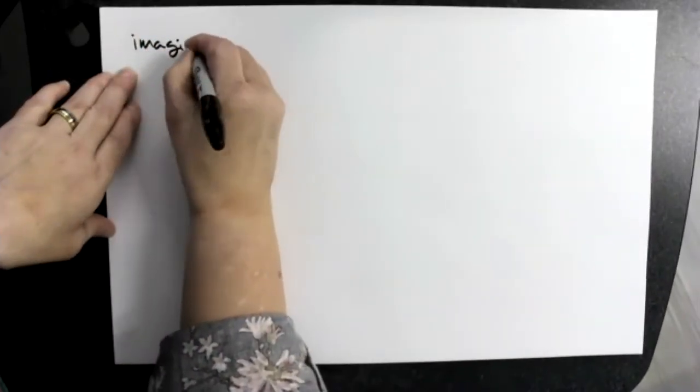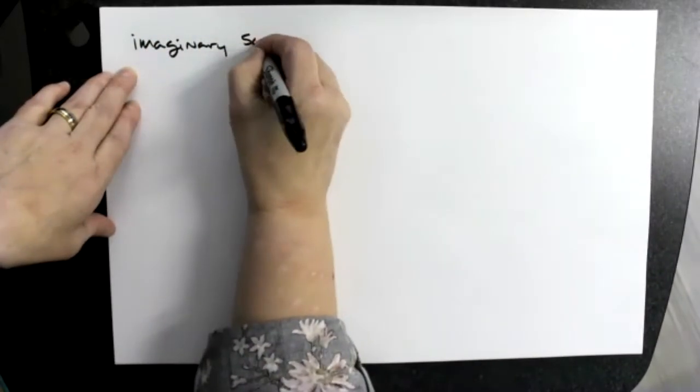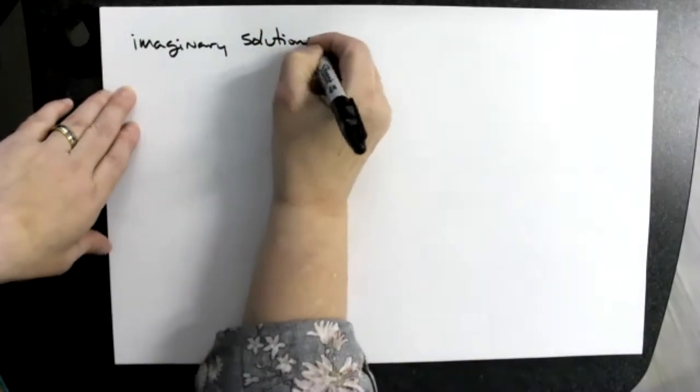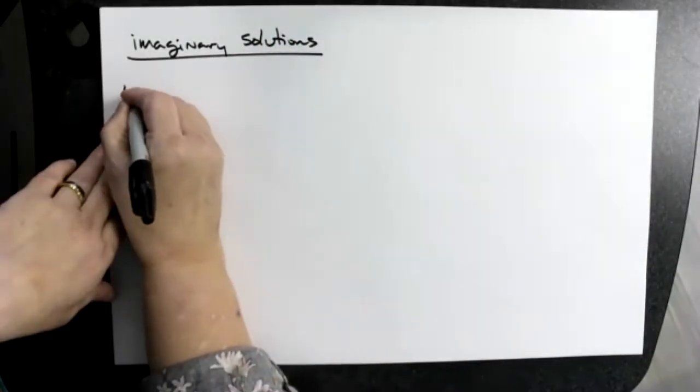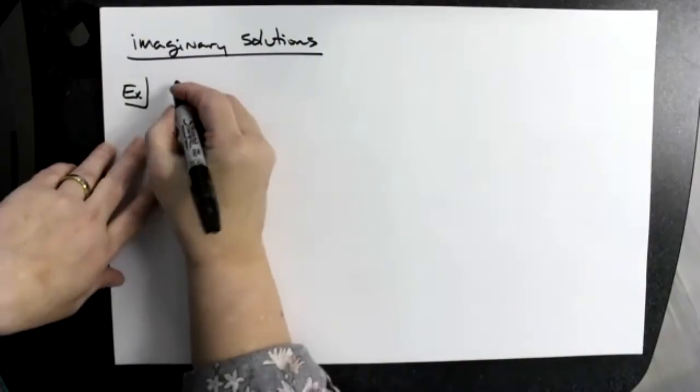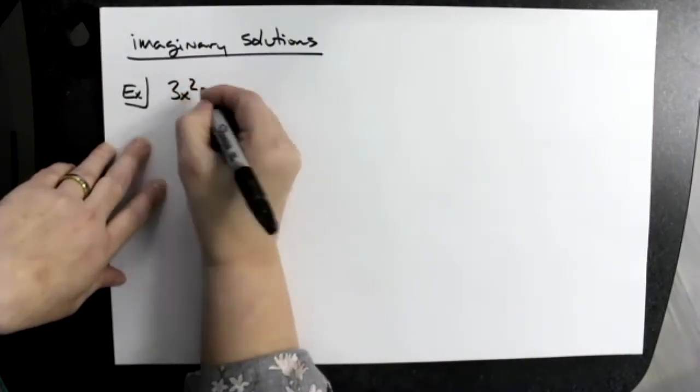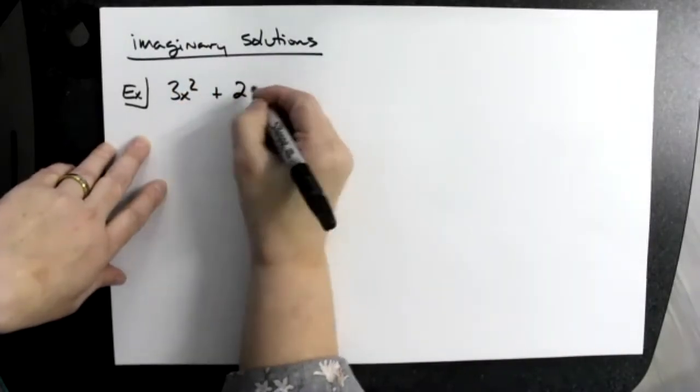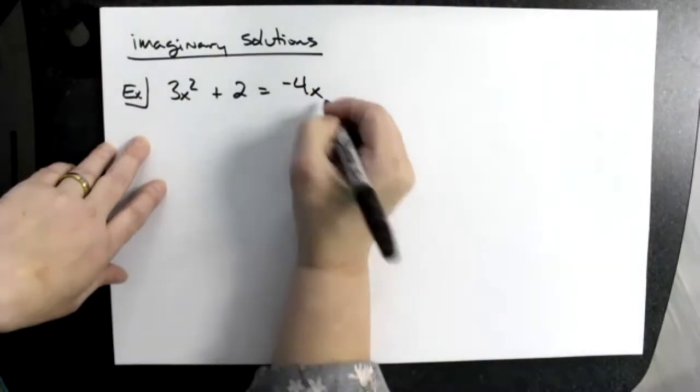Let's take a look at imaginary solutions. Let's suppose we had 3x squared plus 2 equals negative 4x.